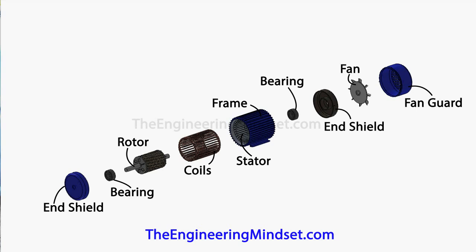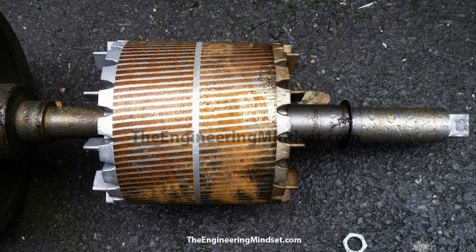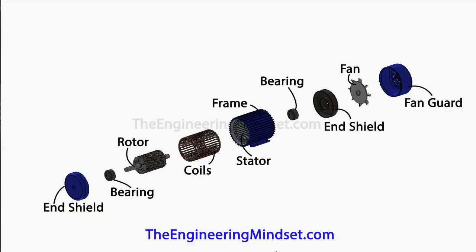The rotor is a shaft with an inductor attached. The inductor is affected by the magnetic field, which causes it to spin. When it spins, it spins the shaft, providing the mechanical power we use to move things. This is a photo of a real rotor — you can see the inductors and the shaft running centrally through the middle. There's also a set of bearings at each end, connected onto the shaft, which fit inside the end shields to ensure the shaft rotates smoothly with minimal friction.